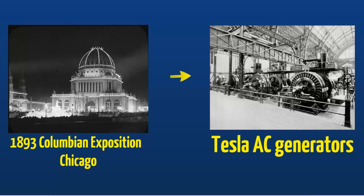At the start of the fair, President Grover Cleveland pushed a button that lit up 100,000 electric lights, dramatically proving the superiority of alternating current to the 27 million people that attended the fair. From that point forward, the vast majority of orders for new power plants were for alternating current plants, and it eventually became the standard for the entire world. While technology has improved over the years and most of Tesla's patents are no longer in use, all power plants today still use alternating current.